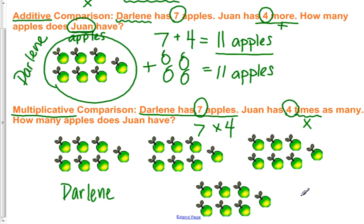So how many does Juan have? Well, I know that seven times four is going to equal twenty-eight apples. So the difficult part here is not figuring out the answer. I know seven plus four equals eleven, easy peasy. Seven times four is twenty-eight, easy peasy.